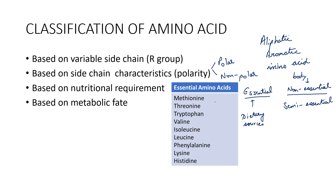Examples of essential amino acids are methionine, threonine, tryptophan, valine, isoleucine, leucine, phenylalanine, lysine, and histidine. There's a very simple mnemonic to remember the essential amino acids — it's called Met-Will-Fly.